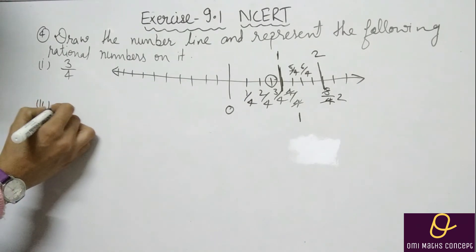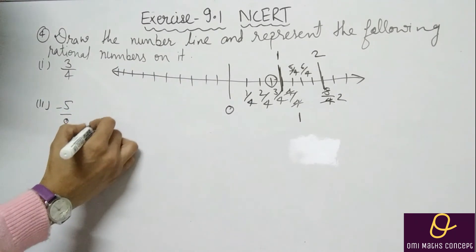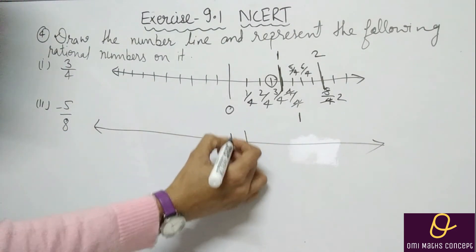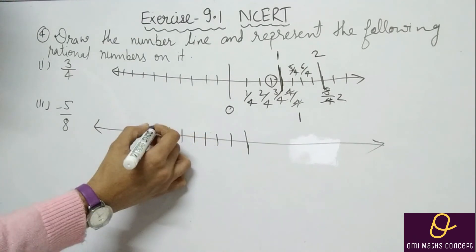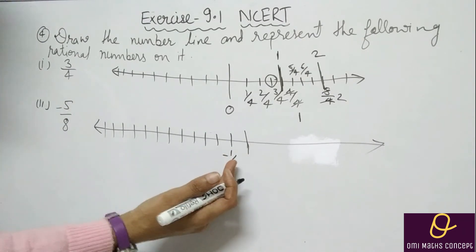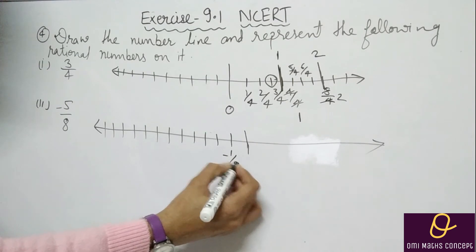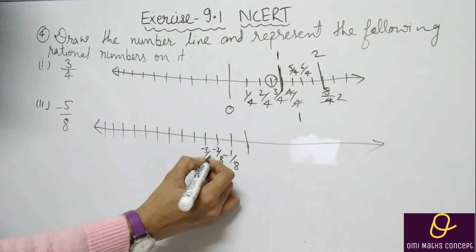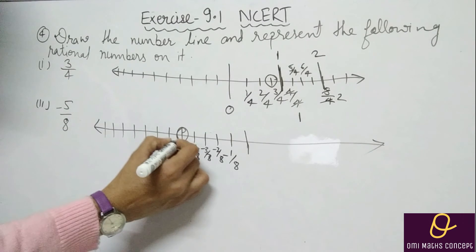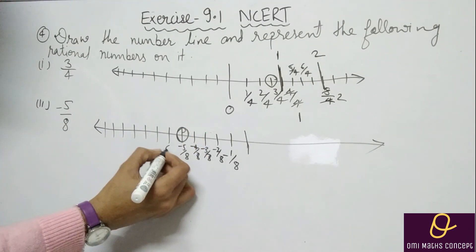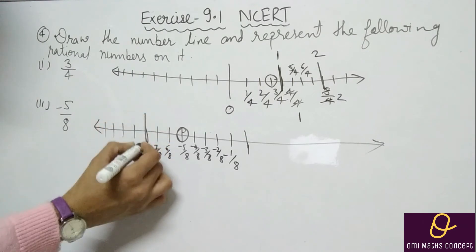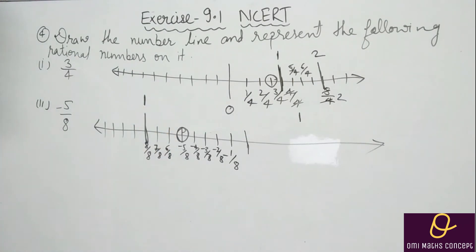Then minus 5 by 8 — toh number line par minus wali side mein. Minus 5 by 8 hai. 1, 2, 3, 4, 5, 6, 7, 8, 9, 10, 11, 12. Minus hai yeh, toh 0 ke left hand side mein hoga. Minus 1 by 8, minus 2 by 8, minus 3 by 8, minus 4 by 8, minus 5 by 8 — yeh hamara 5 by 8 ho gaya, yeh circle karna hai aapko. Phir 6 by 8, 7 by 8, 8 by 8 — ab 8 by 8 kya aayega? 1 aayega, toh yahan par 1 likhna hai.